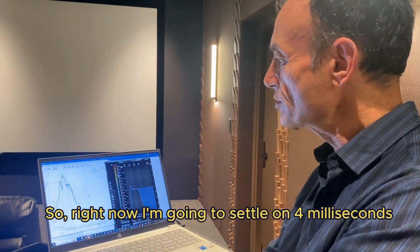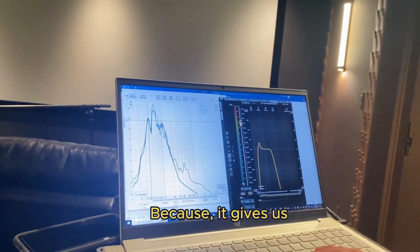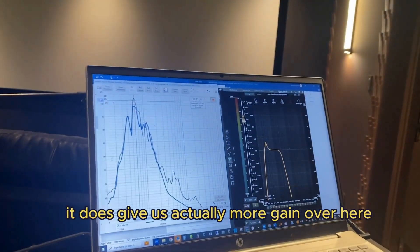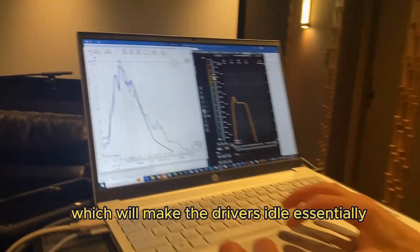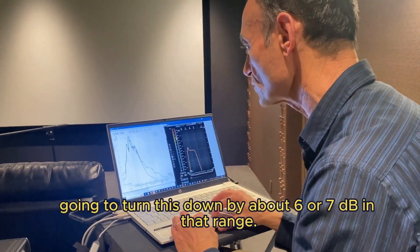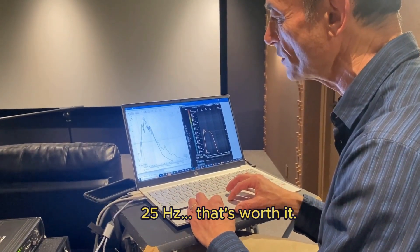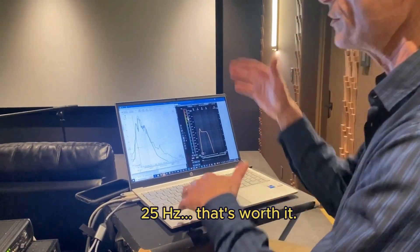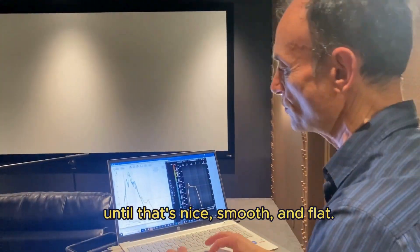Right now I'm going to settle on four milliseconds of delay on the two back subwoofers because it gives us more gain over here, which is worth it. I'm going to turn that way down, which will make the drivers idle essentially. I'm going to turn this down by about six or seven dB in that range. We get a little bit of extra gain here at 25 hertz—that's worth it. Next step is I'm going to equalize that whole result until it's nice and smooth and flat.